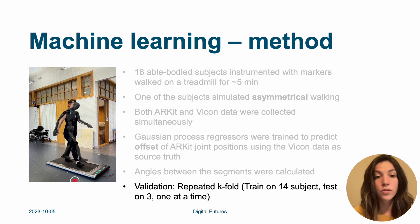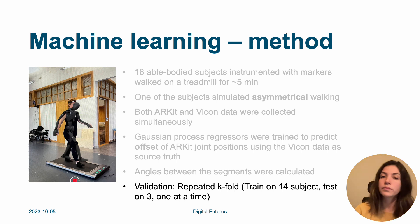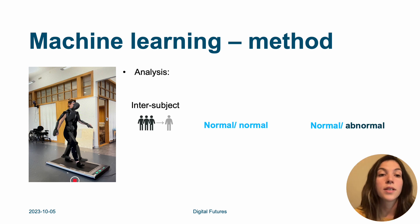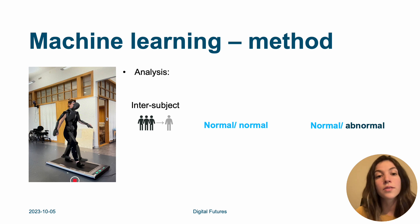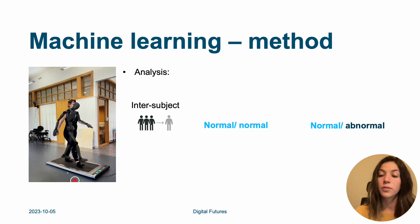For validation, we used a repeated k-fold approach: training on 14 subjects and testing on 3, one new subject at a time, repeated for six folds. The analysis was inter-subject — we trained on subjects and kept others outside for testing. We did normal-to-normal (normal data in training, normal walking in test), and then a second option of normal training data predicting on the abnormal, to see if we can generalize to different movement patterns.